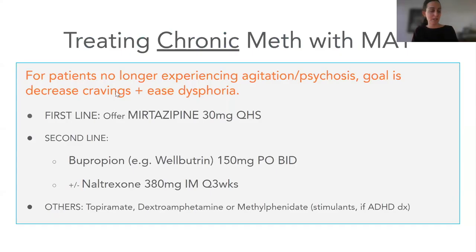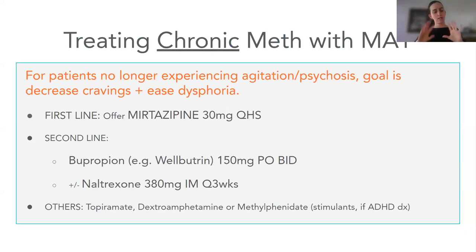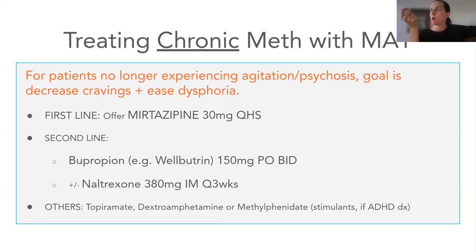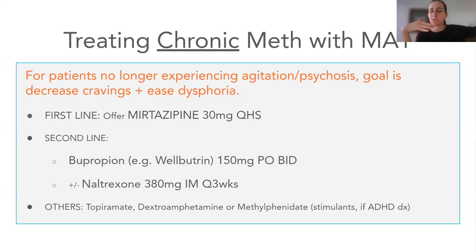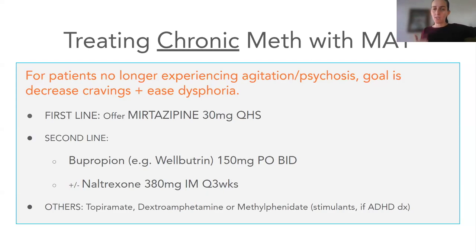Now talking about stimulant use disorder — in particular methamphetamine, since we're in California and that's what we see in the vast majority of cases. This is not about meth-induced psychosis, but about what to do if a person wants to cut back on meth use. Meth withdrawal is kind of like a crippling depression — meth gives you such high surges of dopamine that when you stop, you feel horrible, sad, can't sleep, nothing brings you joy. So we use medications historically for depression to lift a person out of that. These are not game changers like methadone or buprenorphine, but they do help people cut back on their use and cravings.